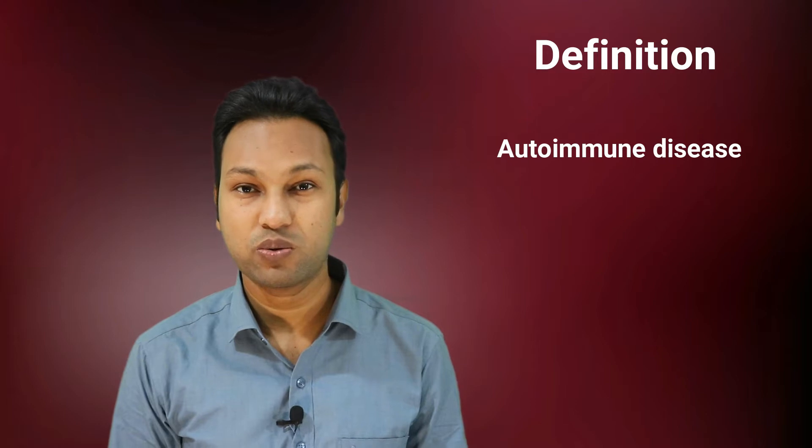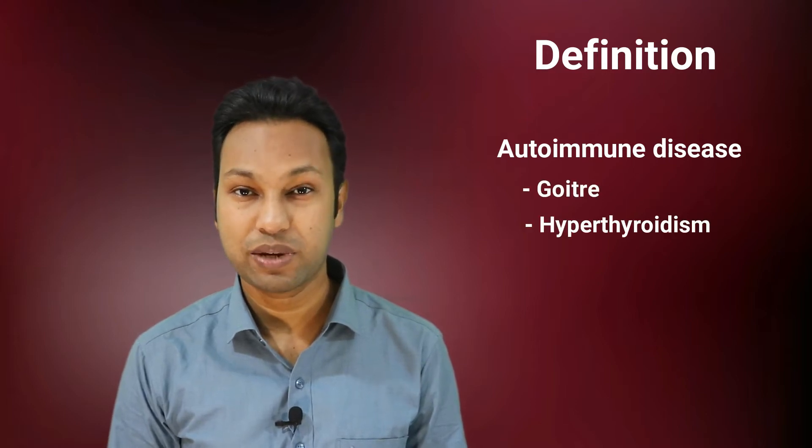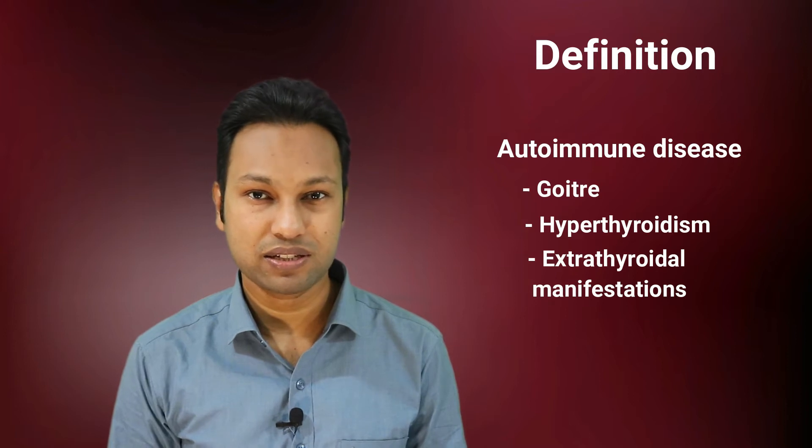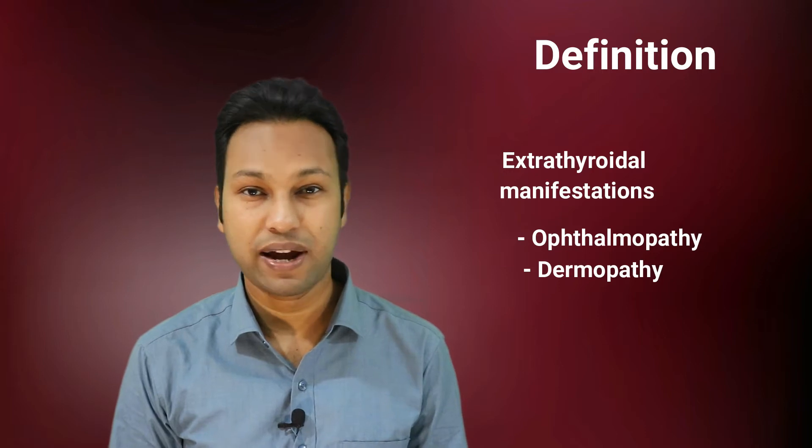What is Graves disease? Graves disease is an autoimmune disease presenting with goiter, features of hyperthyroidism, and some extra-thyroidal manifestations — most commonly ophthalmopathy, less commonly dermopathy and acropathy. The etiology of Graves disease is unknown, but both genetic and environmental factors play a role in its development, and it can run in families.